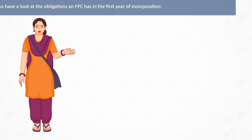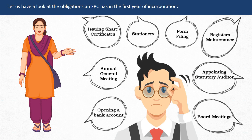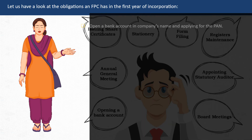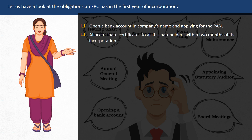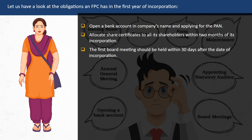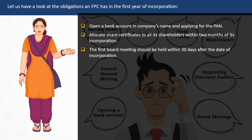Vinod, let us have a look at the obligations a FPC has in the first year of incorporation. Open a bank account in the company's name and apply for the PAN. Allocate share certificates to all its shareholders within two months of its incorporation. The first board meeting should be held within 30 days after the date of incorporation.